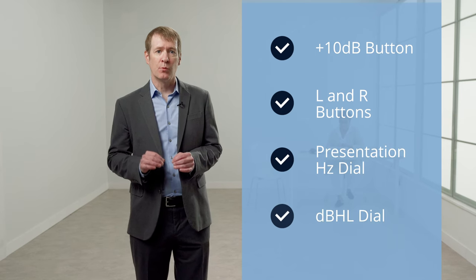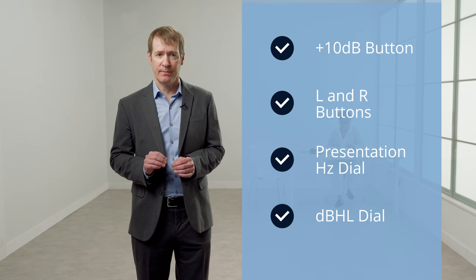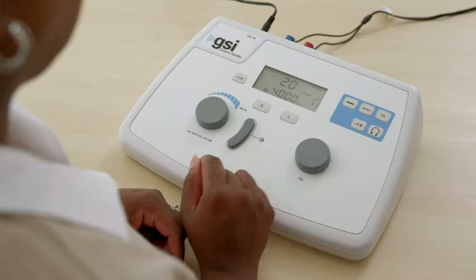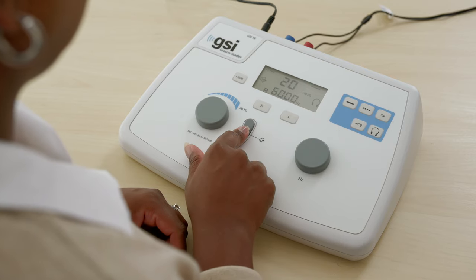The two dials will adjust the presentation frequency and the dB-HL level. When the dB-HL dial is turned to the right, the level of the tone will increase or get louder. When the frequency dial is turned, the test frequency will increase or decrease. Changes to frequency and intensity can be seen on the LED screen.